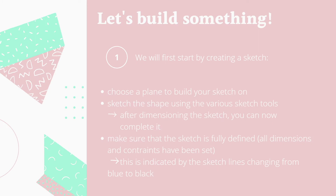We're going to start off by building something, and the first step to doing that is creating a sketch. To start off, you need to choose the plane that you create your sketch on — for example, the top, right, or front plane. Then you just draw out the shape, making sure that it's a closed shape and that you've dimensioned it.